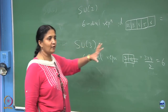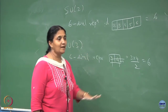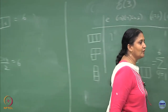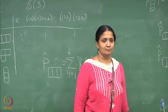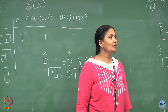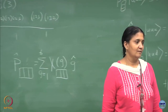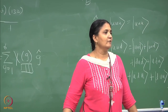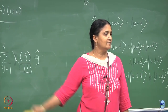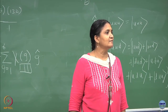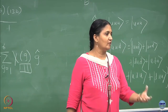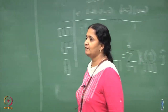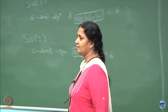Suppose I give you in your hand a 6-dimensional representation and I ask you: does it belong to SU(2) or SU(3)? What will you do? How do you say that the 6-dimensional representation is a spin-5/2 particle, or is it a symmetric rank-2 tensor which is like a di-quark system of SU(3)? How do you decide this? What is the distinction?